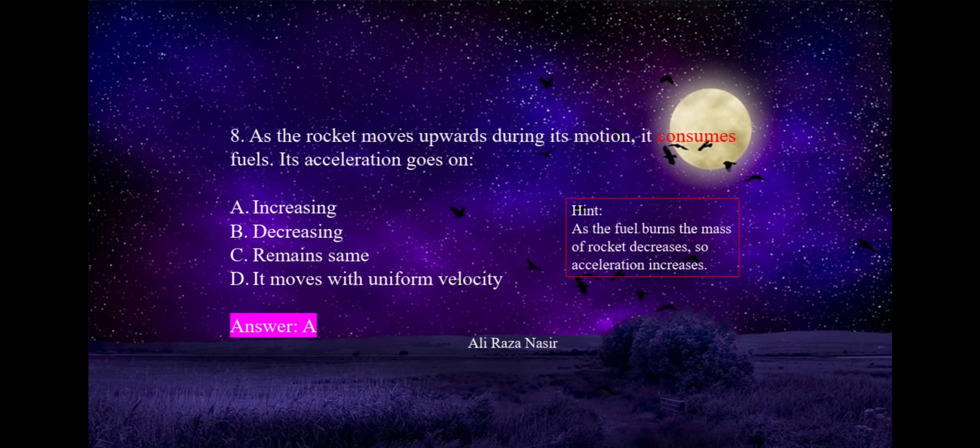Eighth MCQ: as a rocket moves upward consuming fuel, its acceleration goes on — option A: increasing, option B: decreasing, option C: remain same, option D: uniform velocity. We know F = ma. As the rocket moves upward, it utilizes fuel, so mass decreases. When mass decreases, acceleration increases. So option A is correct.